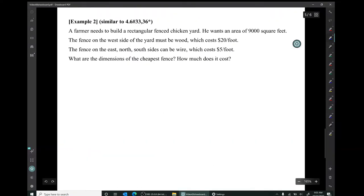In example two, a farmer needs to build a rectangular fenced chicken yard. He wants an area of 9,000 square feet. The fence on the west side of the yard must be wood, which costs $20 a foot. The fence on the other three sides, east, north, south, can be wire, which only costs $5 a foot.